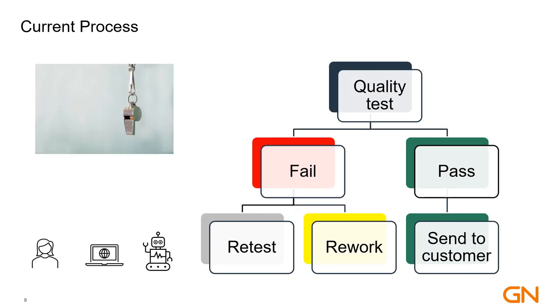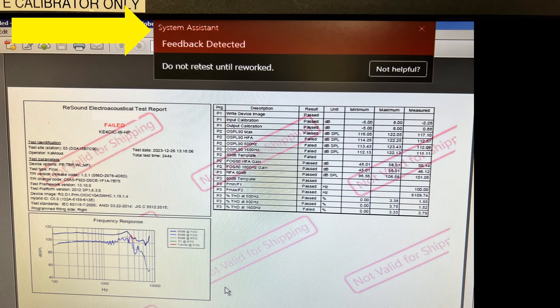Our internal investigation found feedback to be the most common reason custom hearing aids failed quality tests. Therefore, in this project, we trained and deployed a machine learning algorithm to detect failed tests due to feedback, ensuring the hearing aid was sent directly to be reworked and not retested.